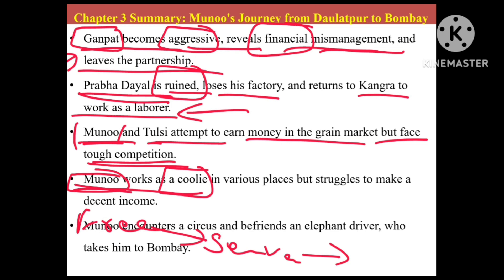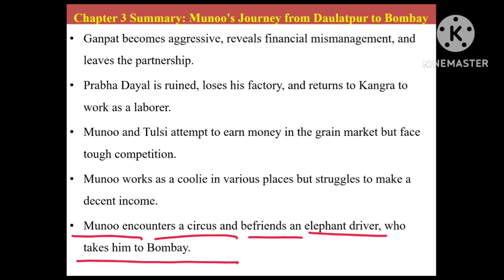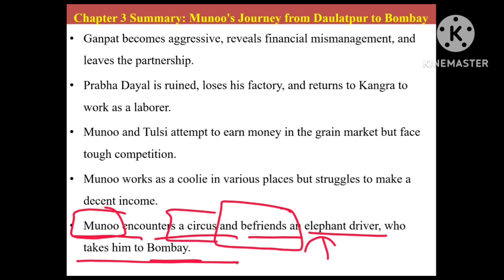Munnu becomes a coolie in various places but struggles to make a decent income — the charges he received were very less. Munnu then encounters a circus and befriends an elephant driver who takes him to Bombay. Munnu found a friend who was one of the members of a circus and knew how to drive an elephant, and so he goes to Bombay.